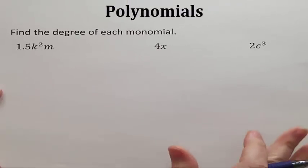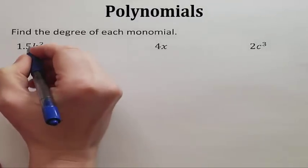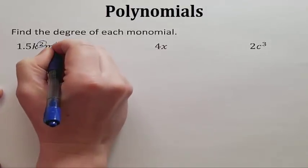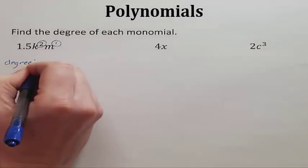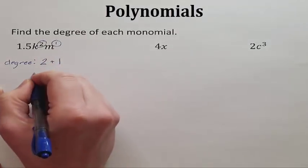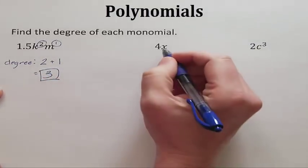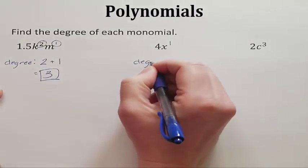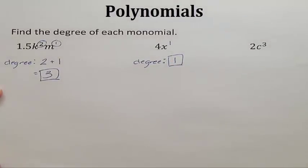A couple more times practicing how to find the degree of a monomial — we only add the exponents of the variables. K has an exponent of 2, and m has an exponent of 1 (if it's not written, it's 1). So the degree of that monomial is 2 plus 1, which is 3. The next monomial has one variable with exponent 1, so its degree is 1.